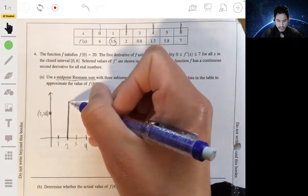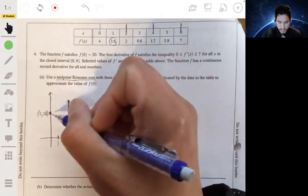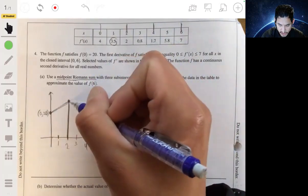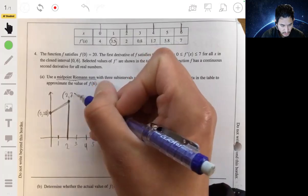So if it changes by 3.5 on this first interval, that means it's going to increase, and at 2, it'll be 23.5.